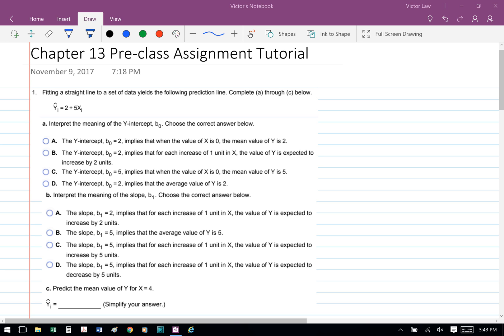Part A: interpret the meaning of the y-intercept B0. Choose the correct answer below. Part B: we're interpreting the slope B1. And Part C: we're predicting the mean value of y for x equals 4. The formula that we need to know here is y equals mx plus b, where m is the slope and b is the y-intercept.